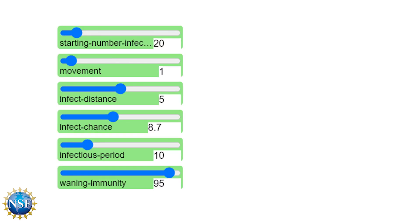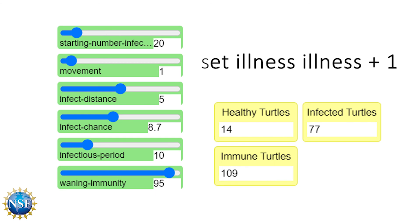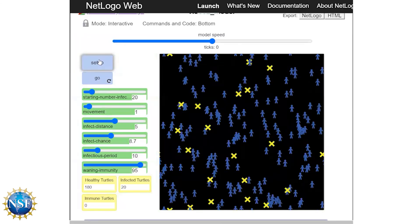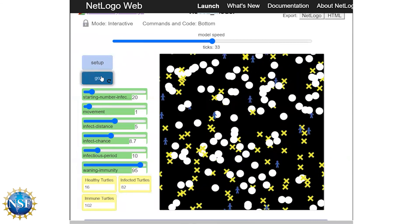In this video, we learned about using variables instead of constant values for experiments by adding sliders to the user interface. We also created a sub procedure that used a counter in to-recover, with turtles counting the amount of time they had been ill. We created monitors to keep track of data while running experiments. Now that we have working models, let's get on to creating some data so that we can learn about infections. Thanks for following along.